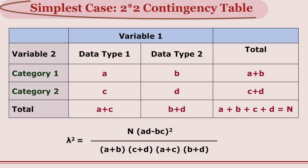To compute chi square, we find the row totals on the right: A plus B, and C plus D. We also find column totals: A plus C, and B plus D. The grand total of all four — A plus B plus C plus D — is N, the total sample. Chi square is computed by the formula: chi square equals N multiplied by (AD minus BC) squared, divided by (A+B) times (C+D) times (A+C) times (B+D).